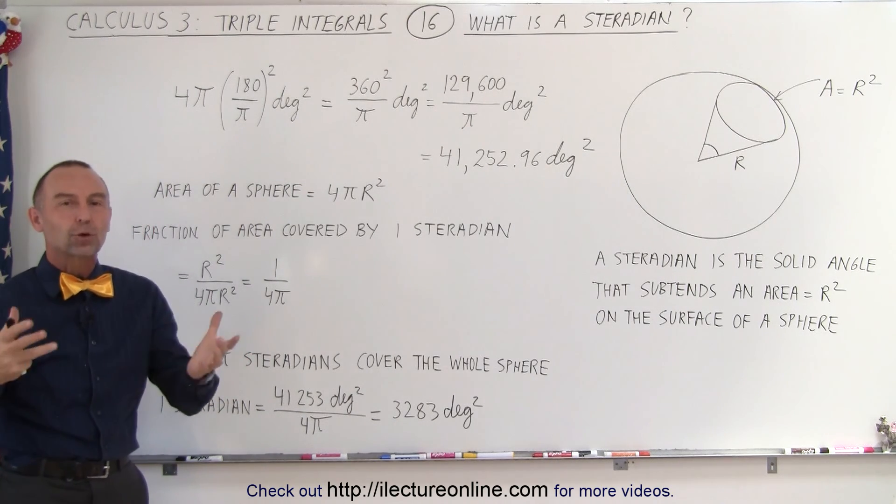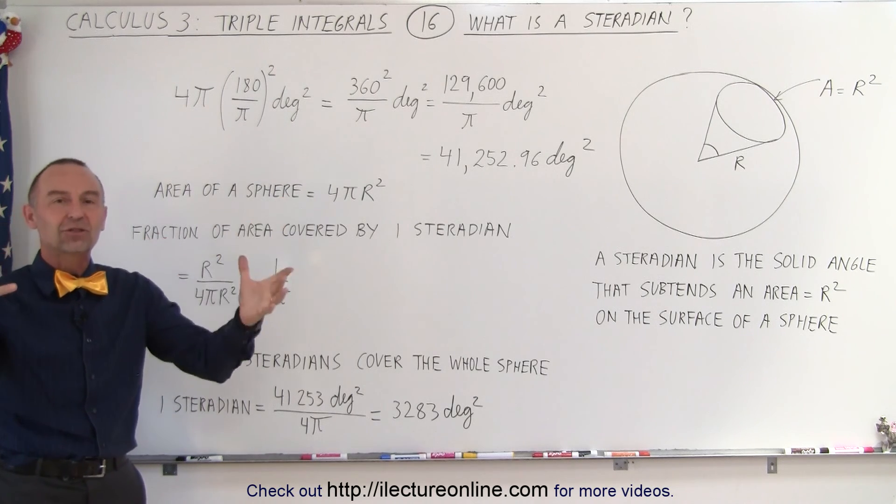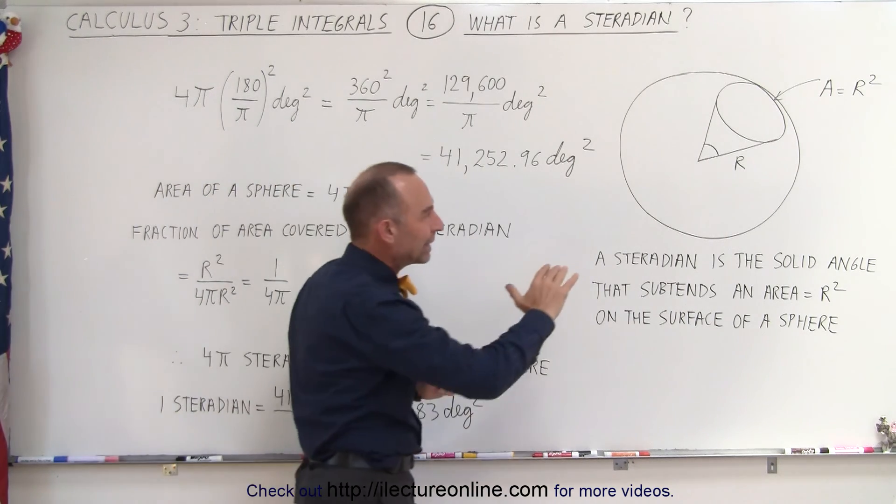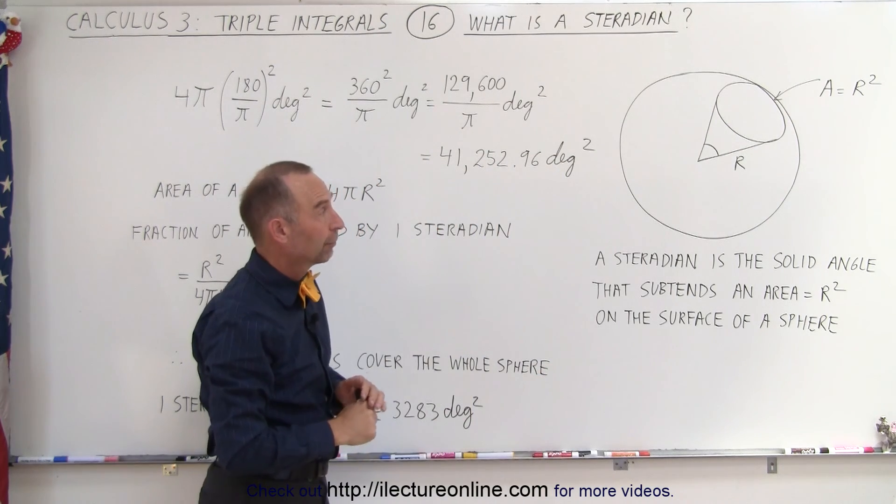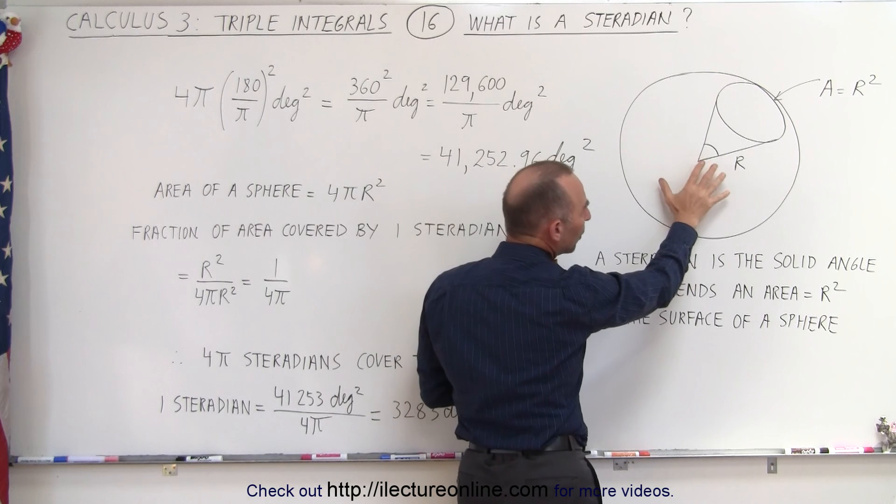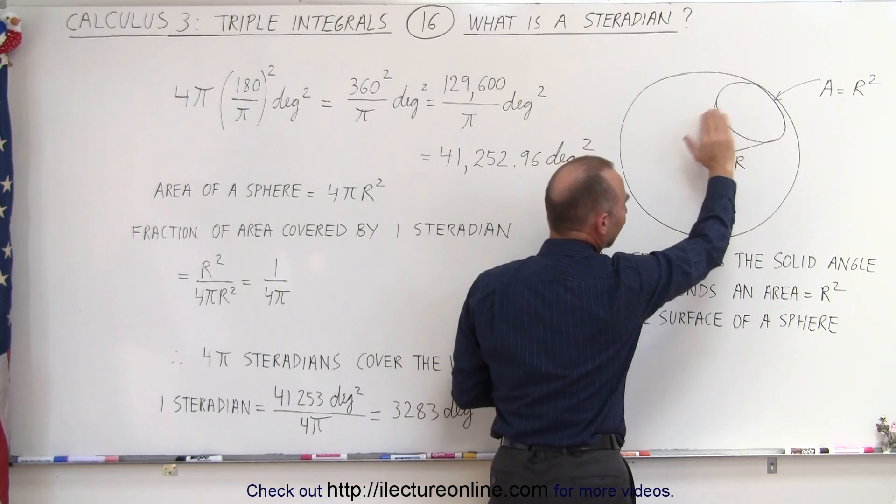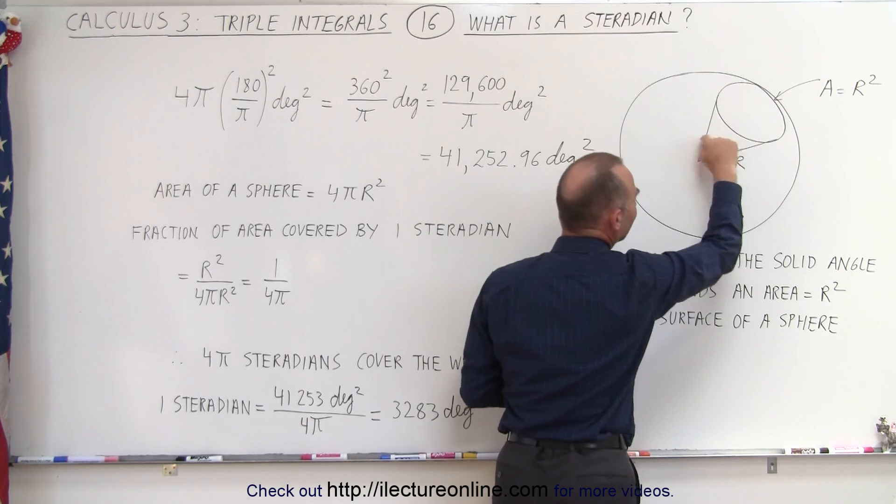That's because in spherical coordinates we quite often deal with cone-shaped sections of a sphere, and so therefore it's nice to know about the angle that subtends the surface area on that sphere. For example, if we have a particular, what we call solid angle, we can then subtend an area on the surface, and so the relationship between the area and that angle then